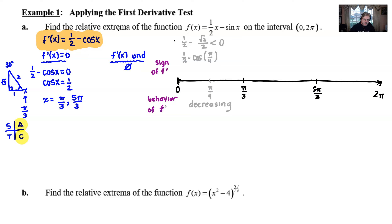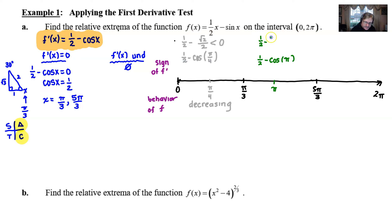Next, we find a test value between π/3 and 5π/3. We're lucky that π works nicely here. Plugging π in: ½ - cos(π) = ½ - (-1) = ½ + 1 = 3/2, which is positive. So the behavior of F is increasing on this middle interval.